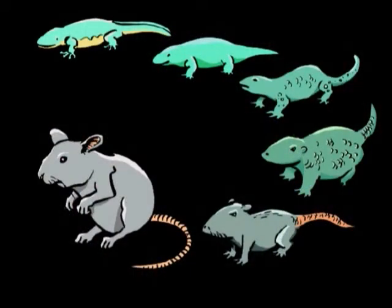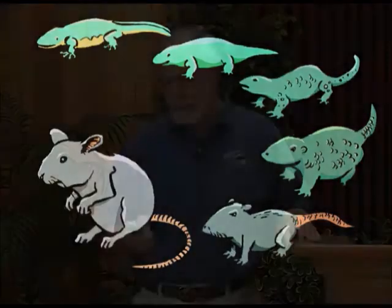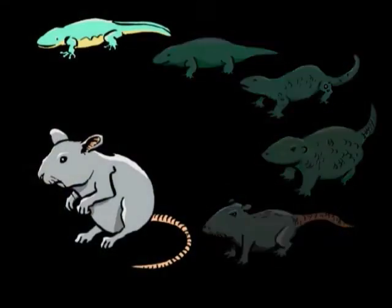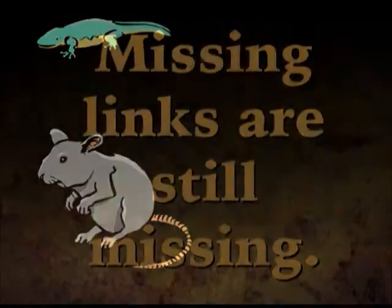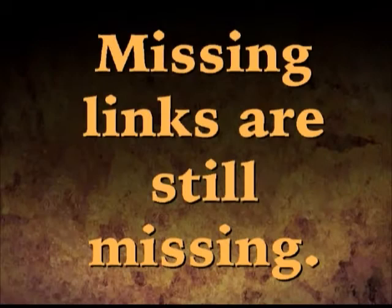What about the distinct kinds? Evolution says there should be all kinds of links and transitions from one type of form to another. Those transitions should be abundant — the museum should have hundreds of thousands of fossils. Why can't we find them? Because they are missing. You can't find them at all. All you have are end products and nothing in between. The missing links are still missing.